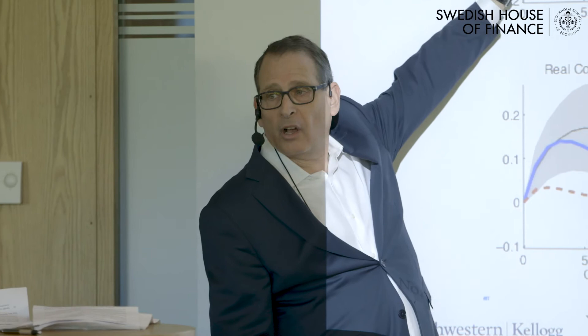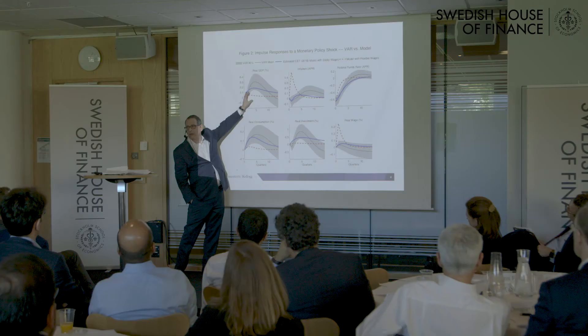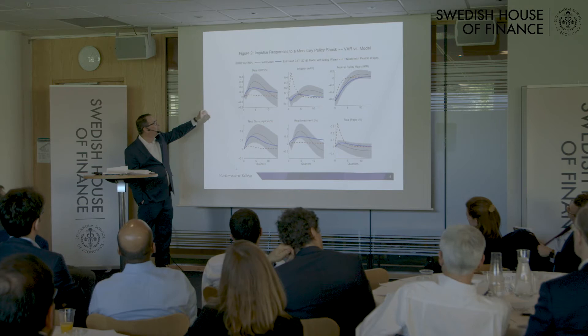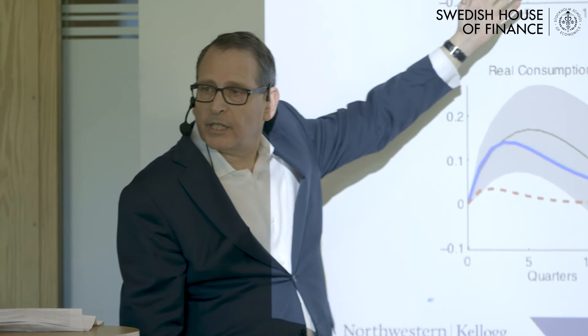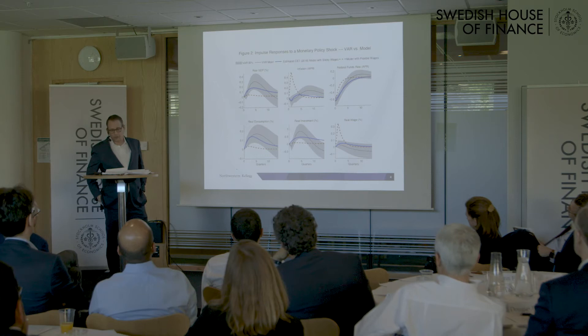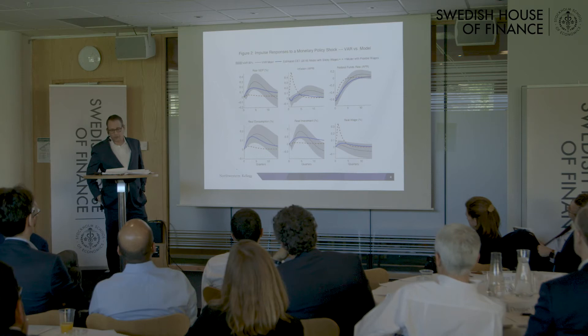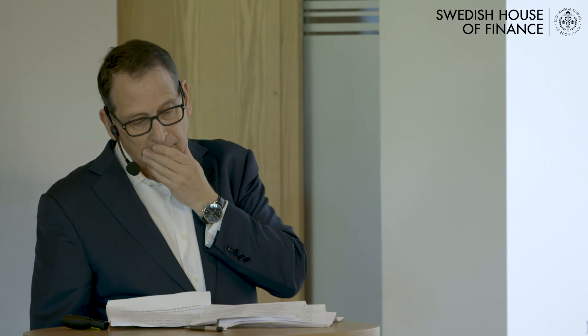The blue line is what the model tells you, and the gray lines are confidence intervals. The model does quite well — we can do formal fits of the likelihood function. You see the water tap idea in the blue line, real wages aren't doing very much, and the model has the anti-Fisherian property, namely that nominal interest rates and inflation are moving in opposite directions.